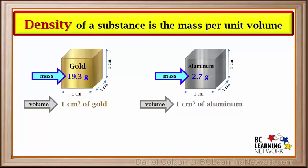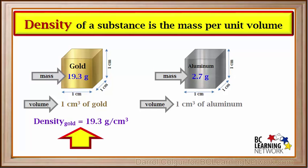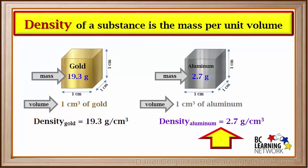If these are both put on a scale, we see that the mass of the cubic centimeter of gold is 19.3 grams, and the mass of the cubic centimeter of aluminum is 2.7 grams. So we can say that the density of gold is 19.3 grams per cubic centimeter, and the density of aluminum is only 2.7 grams per cubic centimeter.